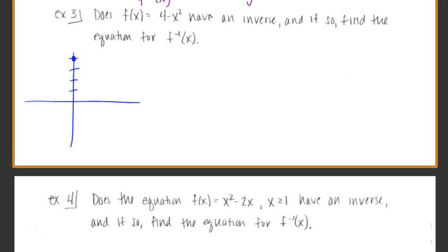4 minus 2 squared is 0. Negative 1 and negative 2 would give us the symmetric points. So the graph's coming down here like that and then coming down here like that. Well, does that pass the horizontal line test? Definitely not. So f of x does not have an inverse.